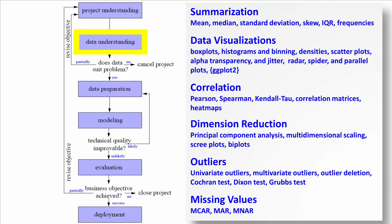We also talked about correlation, different types of correlation: Pearson, Spearman, Kendall Tau, heat maps, correlation matrices, and so on. We looked at dimension reduction, including principal component analysis and some visualizations for that, including scree plots and biplots.